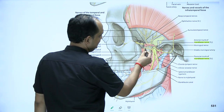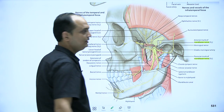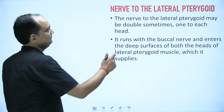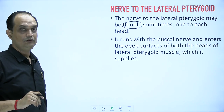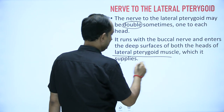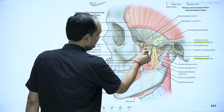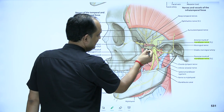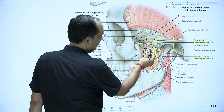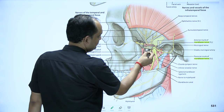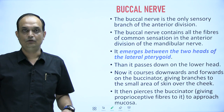The nerve to lateral pterygoid supplies both heads of the lateral pterygoid — the larger lower head and the smaller upper head. Sometimes there are two parts of this nerve, one for each head. It runs with the buccal nerve and enters the deep surface of both heads to supply them from deeper side.